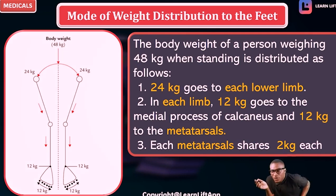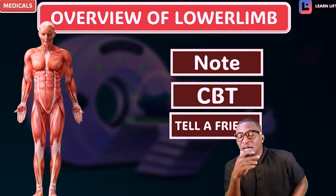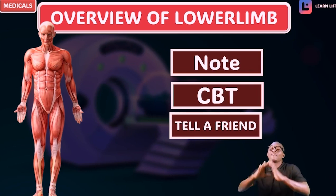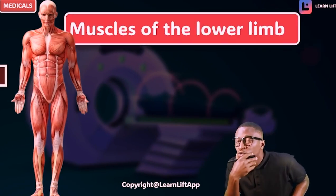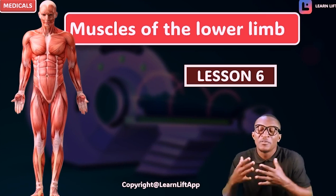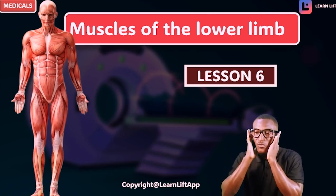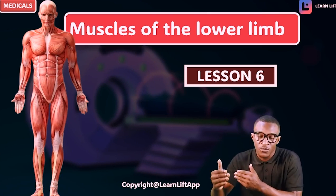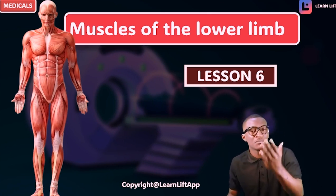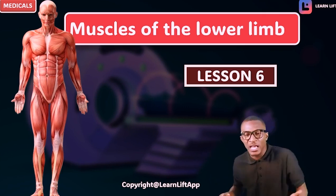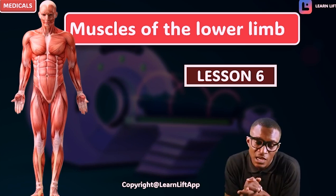This is everything about the functions of the lower limb. Don't forget to run through the notes and practice the CBT questions. In our next class, lesson 6, we will talk about the muscles of the lower limb — the gluteus muscles, piriformis muscle, superior gemellus, inferior gemellus, obturator muscles, gastrocnemius, peroneus muscles, and soleus muscles. Prepare and come ready for that class. Peace out.